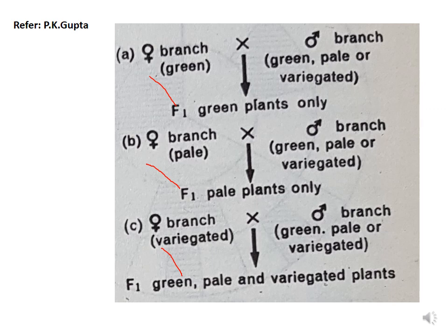Why does the F1 progeny resemble the mother? Because leaf color is controlled by the cytoplasmic genes or chloroplast genes, and the mother parent provides the egg. The egg has a large amount of cytoplasm, and the chloroplast genes present in that cytoplasm control the leaf pattern or leaf color. This is why it is an example of cytoplasmic inheritance.